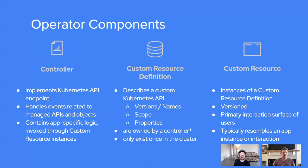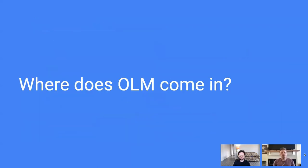The resources that the customers create that implement the custom resource definition are typically called custom resources. So with this information in mind, a typical approach to using an operator would be for a user to create the MySQL CR in our example. The operator would notice that that event occurred, would look at the MySQL database described by the user, and it would try its best to create that MySQL application. And then it would write the status of the MySQL application to the status of the custom resource I created. This gives me a single window to define what I want on cluster, and then a single place to look to see the status of that resource. Hopefully that makes it fairly clear why operators are valuable in the Kubernetes ecosystem, but let's discuss why OLM comes into the picture for the management of these operators.